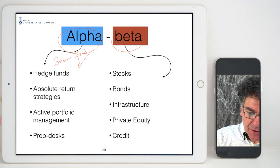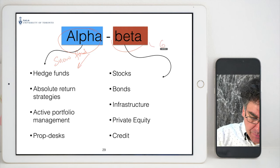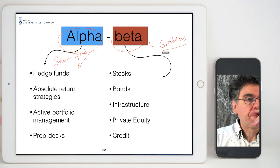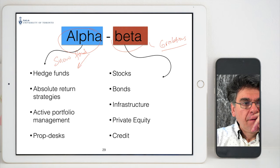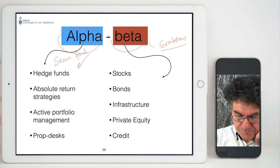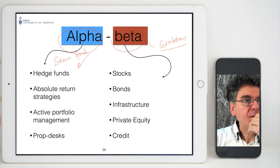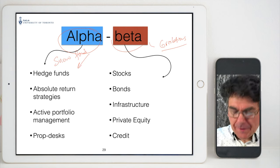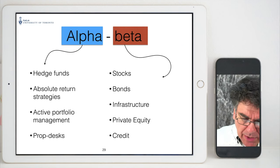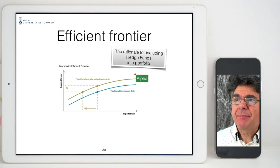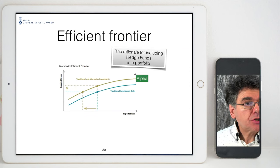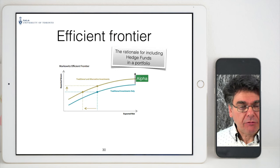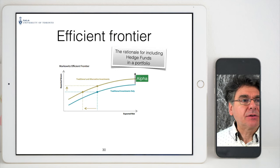Alpha and beta are called that because of linear regression, which is the next topic. Also worth noting: when you introduce an investment with alpha into the Markowitz framework, the efficient frontier moves up — an important consequence we will explore.